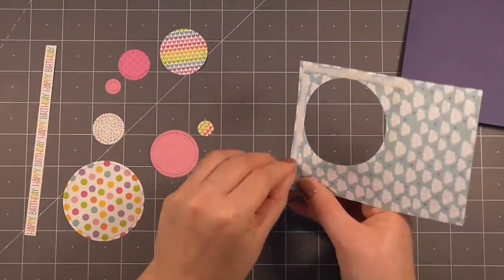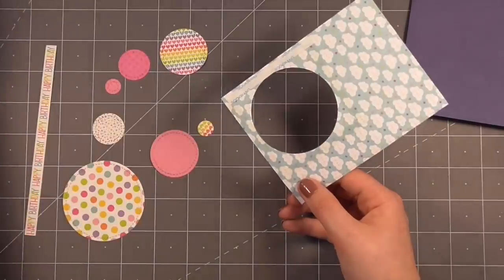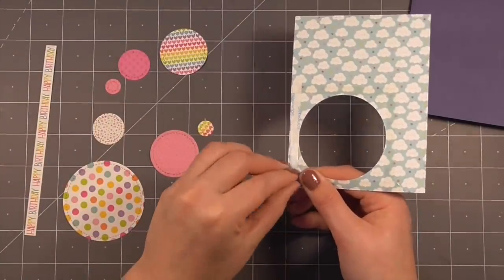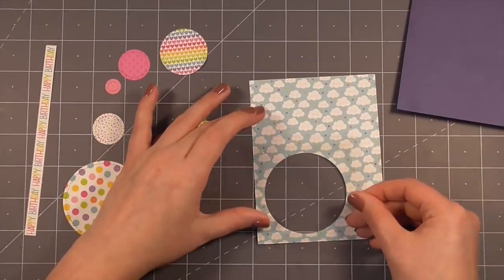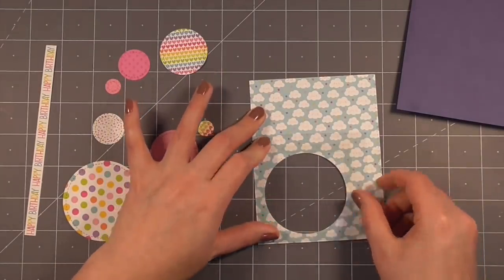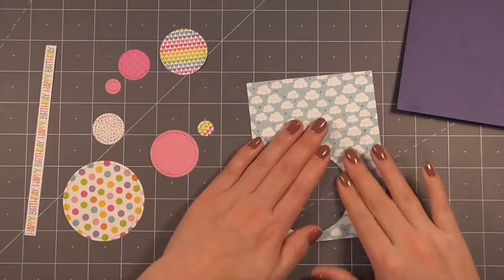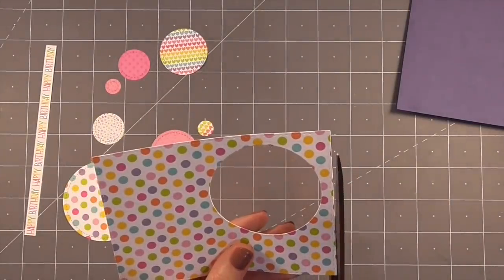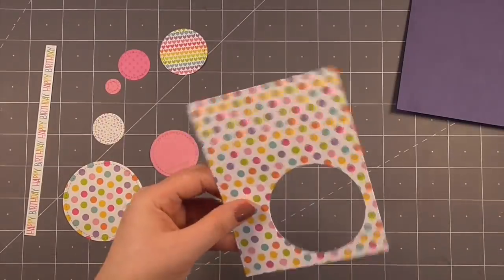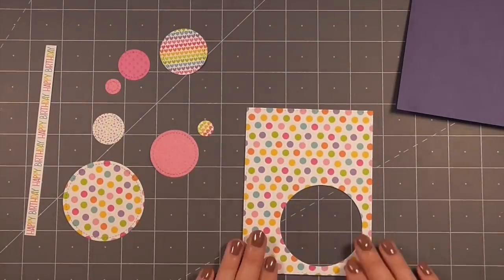For this first card I wanted to share with you my hack for working with a curved or round shaker window. It can sometimes be a little bit difficult to work with your foam tape when you've got to bend around a curve. For this very first card I did want to include the full process of creating the shaker card just in case it's a new concept to you or you wanted a refresher.